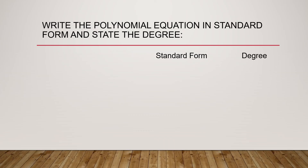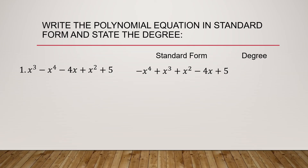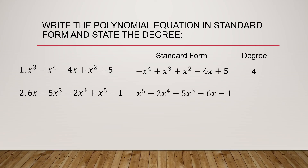Let us try to write the polynomial equation in standard form and state the degree. For number 1, we have x cubed minus x to the 4th minus 4x plus x squared plus 5. In standard form, it is negative x to the 4th plus x cubed plus x squared minus 4x plus 5, and the degree is 4. For number 2, we have 6x minus 5x cubed minus 2x to the 4th plus x to the 5th power minus 1. In standard form, it is x to the 5th minus 2x to the 4th minus 5x cubed plus 6x minus 1, and the degree is 5.